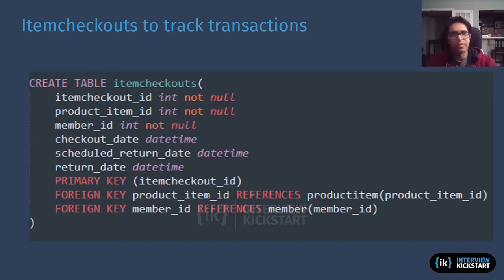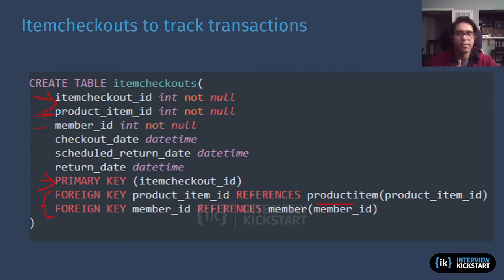One of the other key tables in our design was the transactions table, or rather the item checkouts table, which is going to be keeping track of those transactions. You see we have our item checkout ID as our primary key. We have two foreign keys here — our product item ID and member ID. You can see the two referential integrity statements: the product item ID is going to refer to the product item table, which you'll see in the next slide in the product cluster. Then you have the member ID referencing the member table. Besides that, you just have the checkout date and the other dates associated with the checkout.